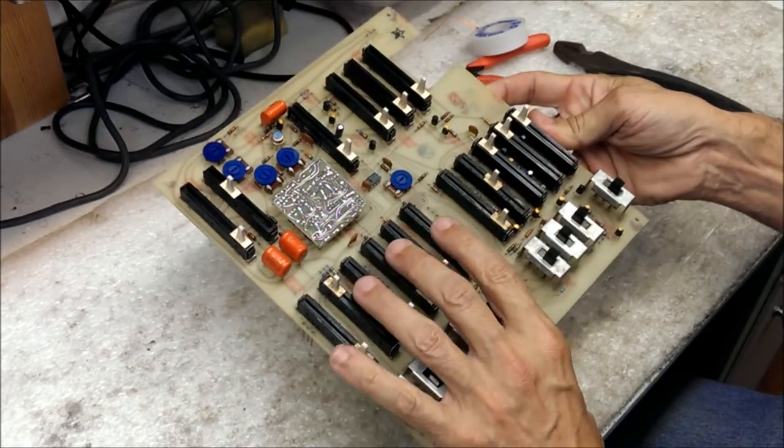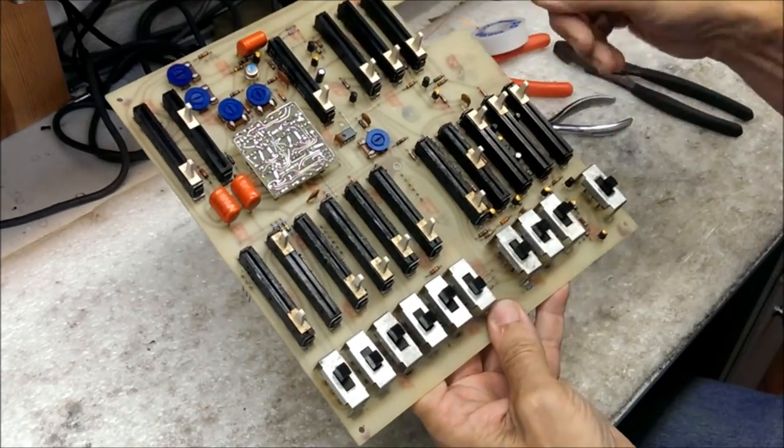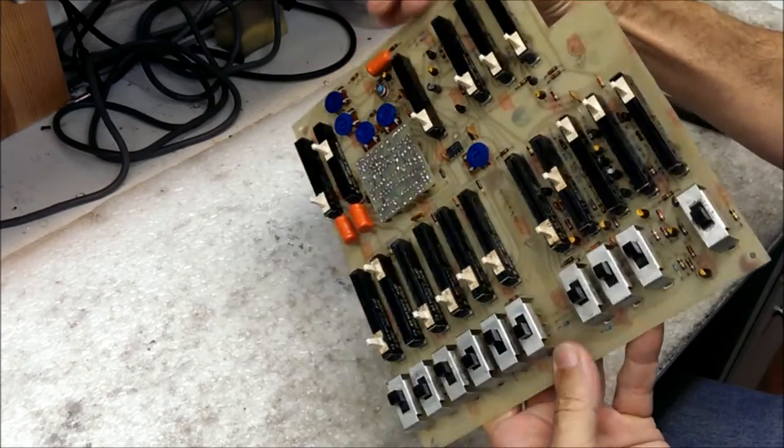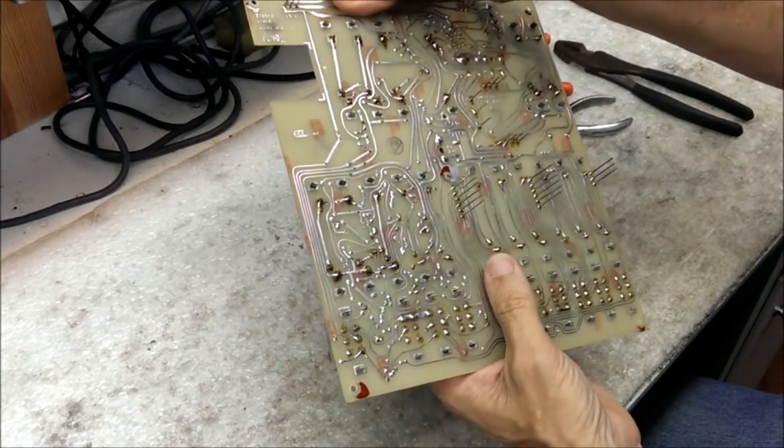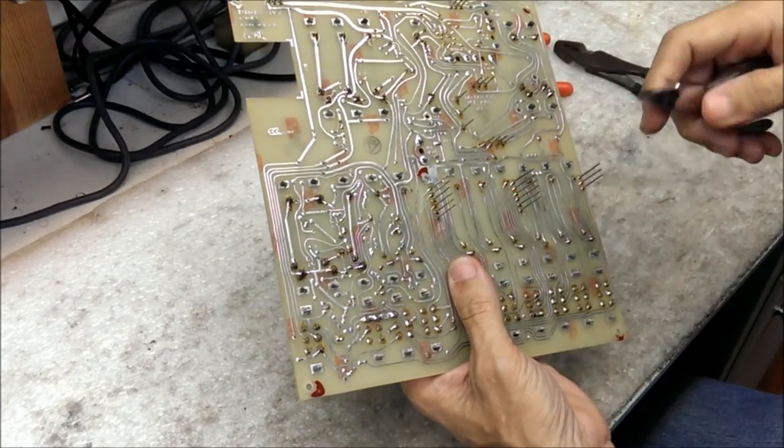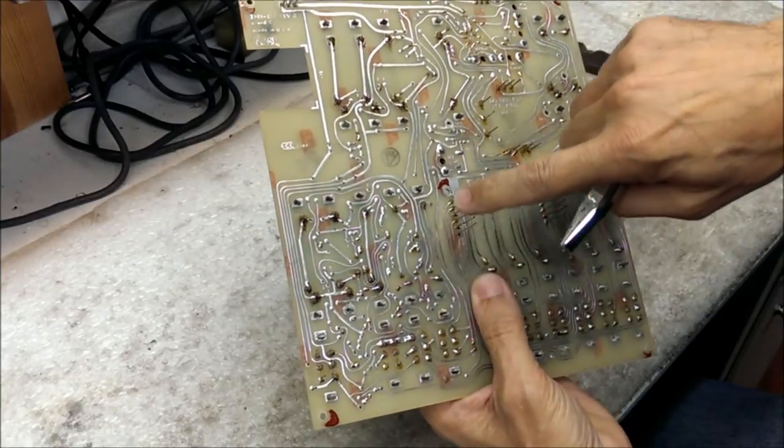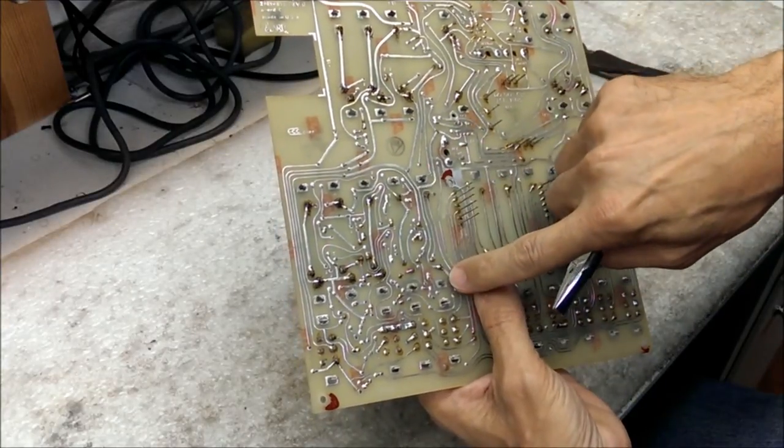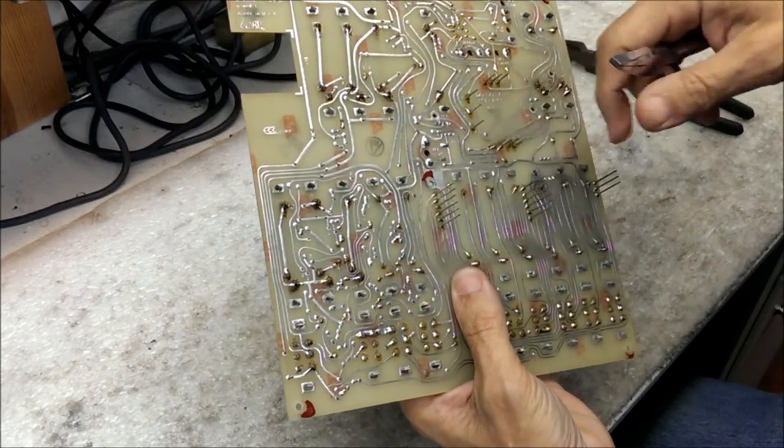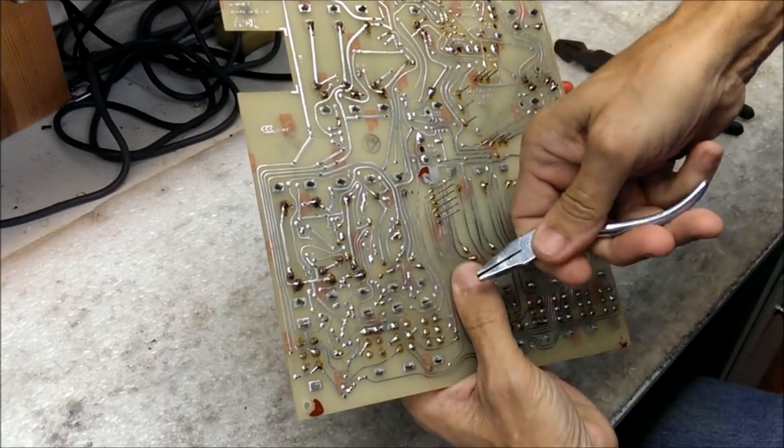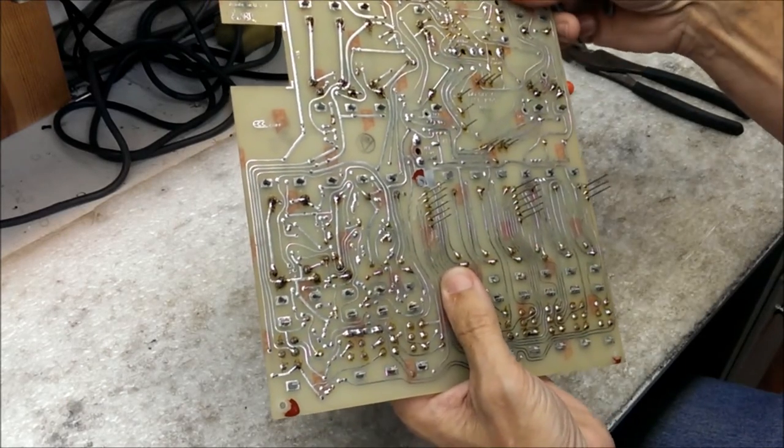So the first step is going to be to remove the potentiometer from the circuit board, and to do that, we'll go in from the back side. And you can see that these pots are attached with a metal tab that pokes through the circuit board, and that tab is then twisted, and it's that twist that kind of holds it into place.